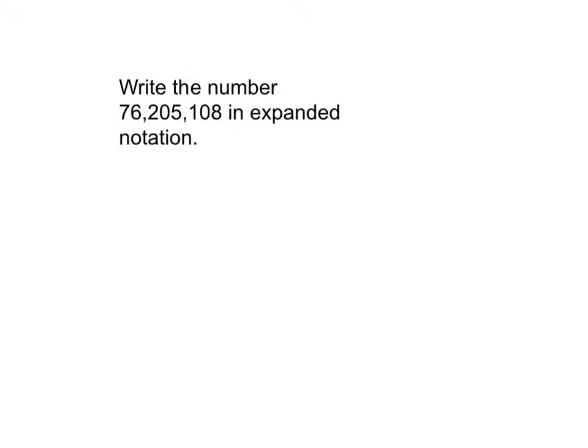Here, this question is asking you to write the number 76,205,108 in expanded notation. So, expanded notation, that first number that we're going to end up writing is 70,000,000. After we write 70,000,000, we go ahead and write an addition sign. And we add it together with the next digit that is not a zero. And the value of that is 6,000,000.